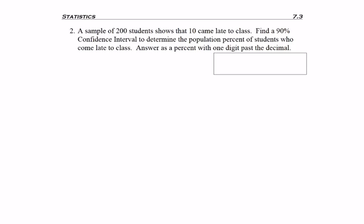So the problem reads, a sample of 200 students shows that 10 came late to class. Find a 90% confidence interval to determine the population percent of students who come late to class. Answer as a percent with one place to the right of the decimal.